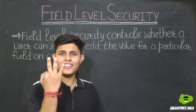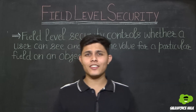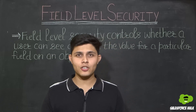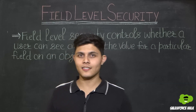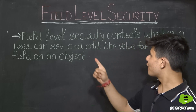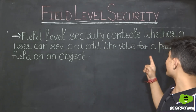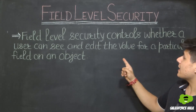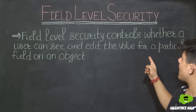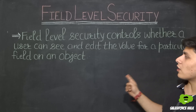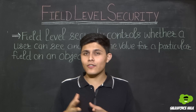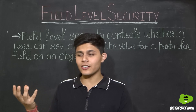Let's look at the third level of security, Field Level Security, by definition: Field Level Security controls whether a user can see and edit the value for a particular field on an object. This is what Field Level Security actually does.